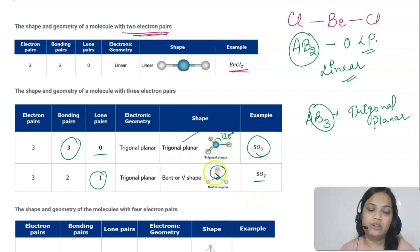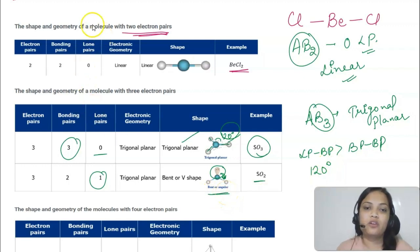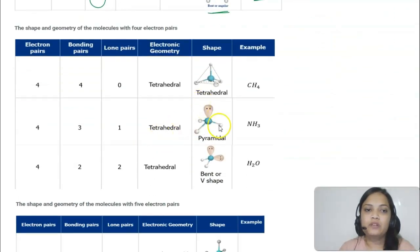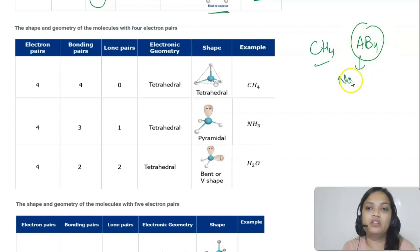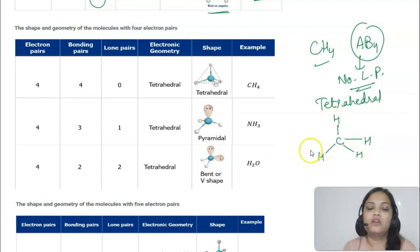If there is one lone pair in an AB3 arrangement, like SO2, the shape would have been trigonal planar but due to lone pair–bond pair repulsion the bond angle reduces from 120 degrees and the molecule gets a bent or angular shape. For four electron pairs with no lone pair, like methane (AB4), the shape is tetrahedral with all four atoms at the four corners of a tetrahedron and a bond angle of 109.5 degrees.